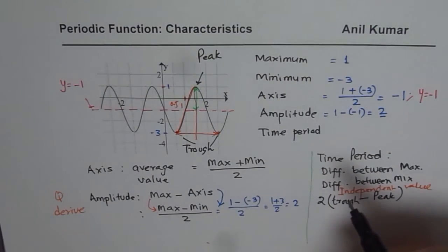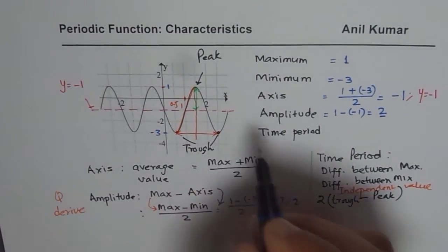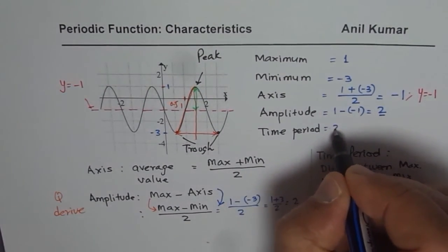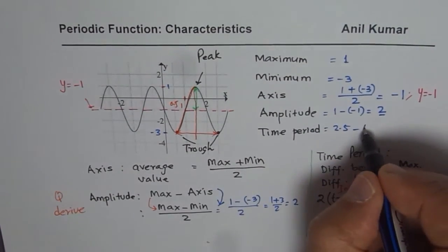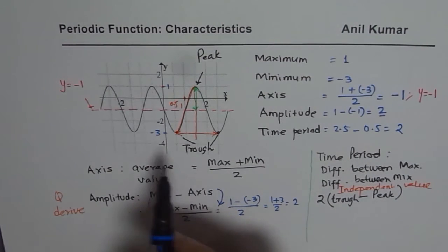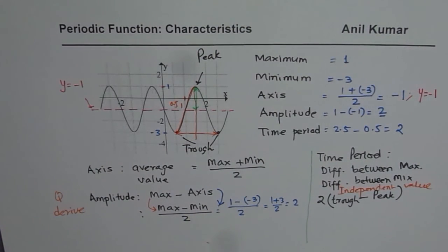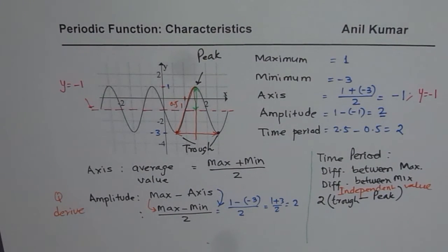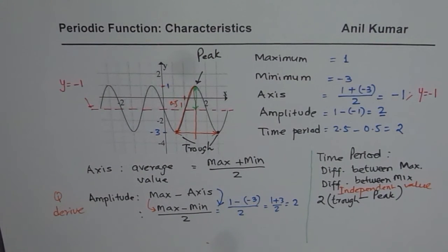In this particular case, let's take two minimums. The minimums are at 2.5 and 0.5, so the time period is 2.5 − 0.5 = 2 units. I hope this gives you a very clear idea of how to find maximum, minimum, axis, amplitude, and time period for a sinusoidal function.